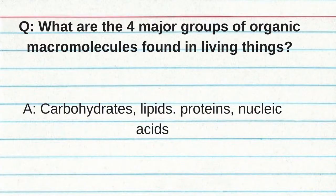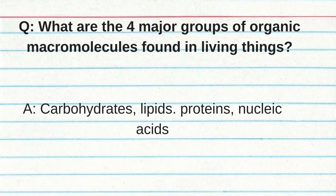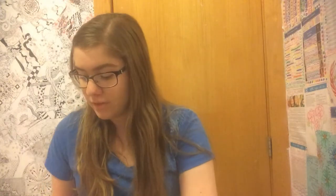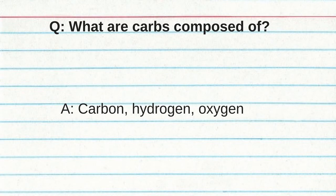What are the four major groups of organic macromolecules found in living things? Carbohydrates, lipids, proteins, and nucleic acids. What is the function of carbohydrates? They're the primary source of energy and they have some structural functions as well. What are carbs composed of? Carbon, hydrogen, and oxygen.